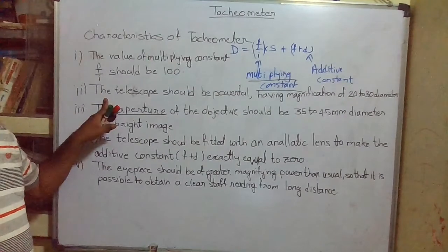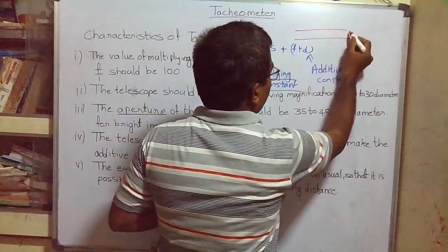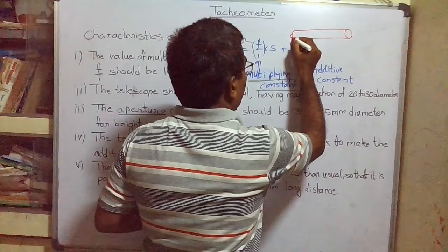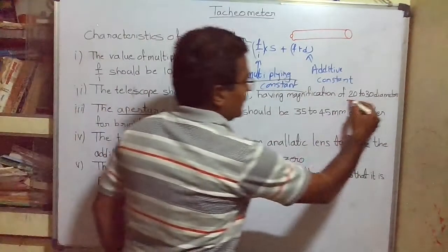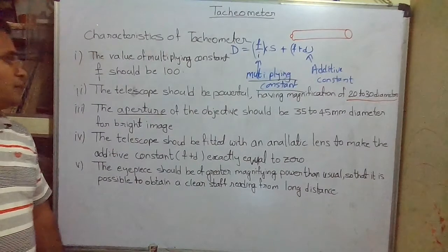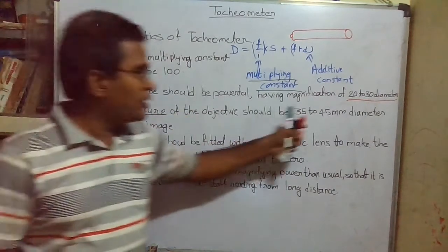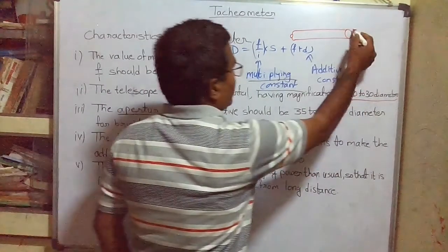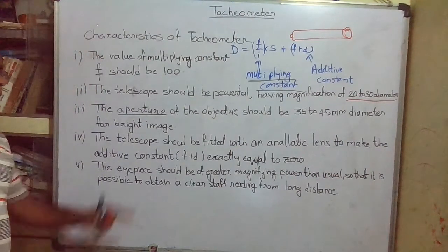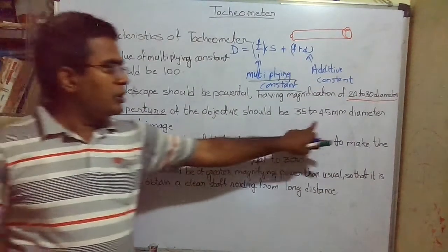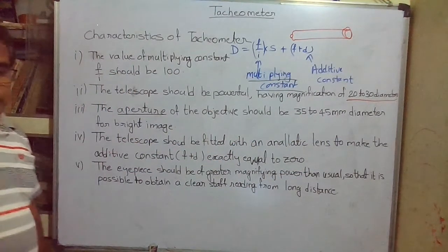The second characteristic is that the telescope should be powerful, having a magnification power in the range of 20 to 30 diameters. The third characteristic is that the aperture of the objective lens of the tachometer should be in the range of 35 to 45 mm diameter, so that we can get a bright image.